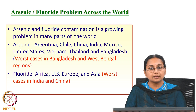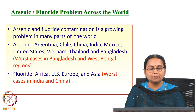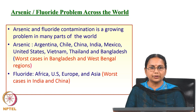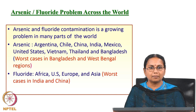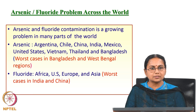Arsenic and fluoride contamination is a growing problem in many parts of the world — Argentina, Chile, China, India, Mexico, United States, Vietnam, Thailand, and Bangladesh. The worst cases of arsenic contamination are in Bangladesh and the West Bengal region.